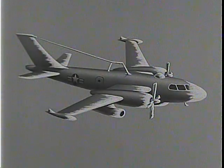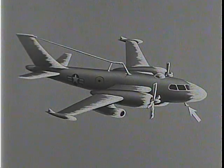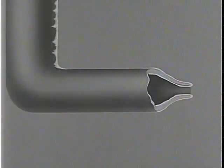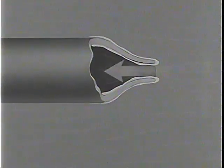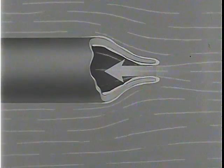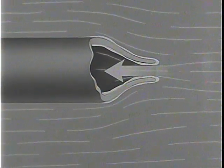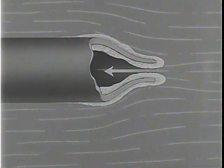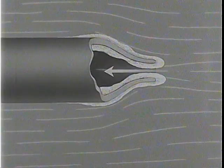Ice may form inside the pitot tube. The pitot tube activates the aircraft's air speed indicator, and the result of heavy icing here will be constriction of the flow of air, causing inaccurate air speed readings for the pilot.